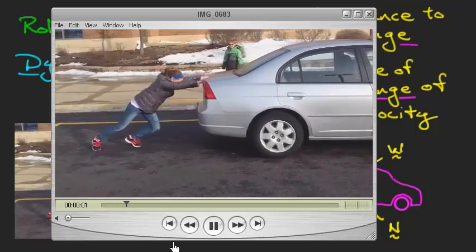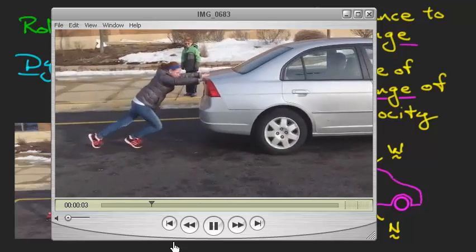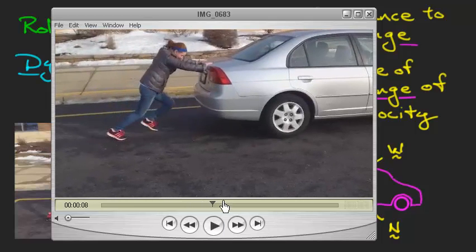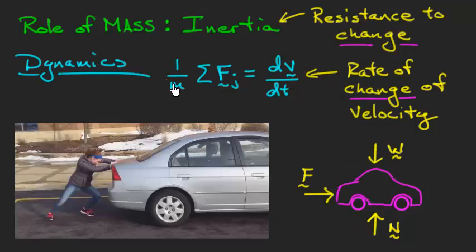And look what's happening. The car is changing its velocity, but it's changing its velocity rather slowly. And why is that? Because mass is big.